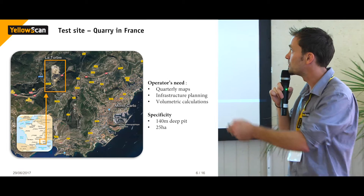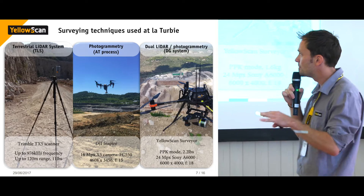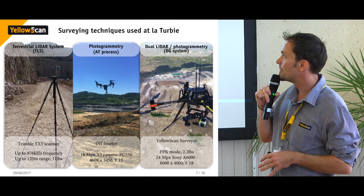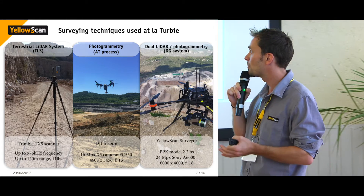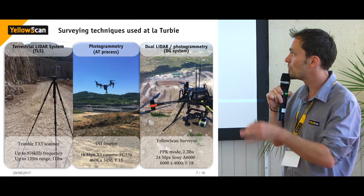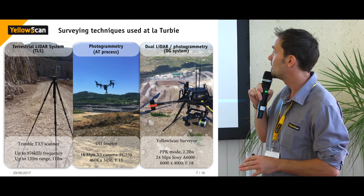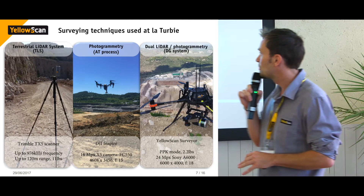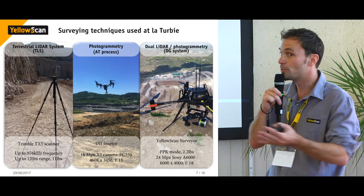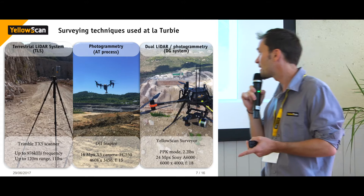This was the area where we deployed our survey methods. On the same day, with the same weather conditions and the same time slots, we deployed three methods. One was a terrestrial LiDAR system, a Trimble TX5 mounted on a tripod — traditional land survey with a scanner. We also deployed a photogrammetric sensor, the commercially available DJI Inspire with a 16 megapixel camera.